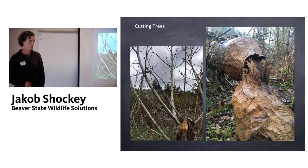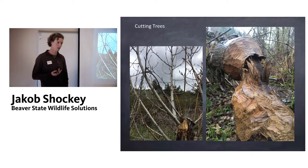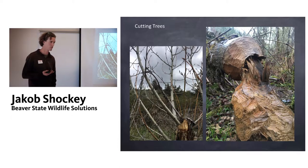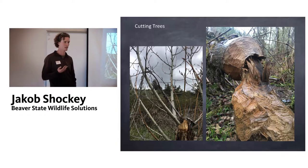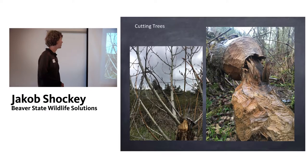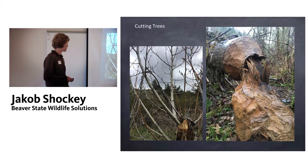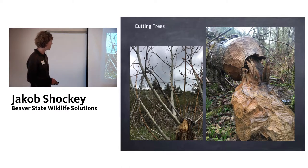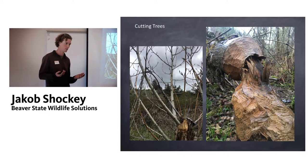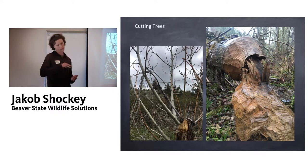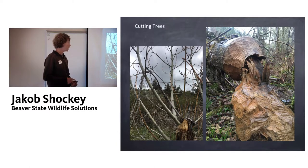Cutting trees is another big issue — this is actually what most beaver are lethally controlled for, especially along riverfront properties. We've all got beautiful ornamental trees or apple trees that are cared a lot about, and beaver are really quick and efficient at taking those down. A lot of our native riparian plants have actually co-evolved with beaver — here we have a cottonwood that just coppices at the point where it was cut and it's coming back. But apple trees don't. That's something I see a lot.